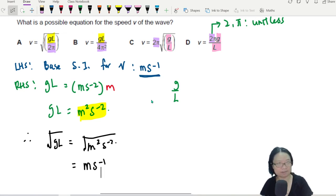Teacher, same, same. Correct. So we take GL with a square root. The answer is A. GL with the square root. Teacher, the 2π, remember, 2π, no unit. Don't care.